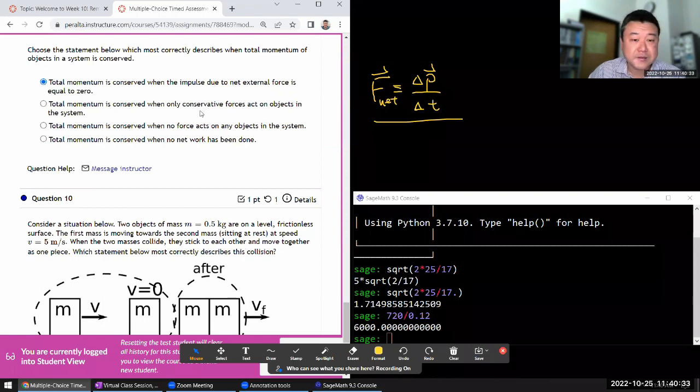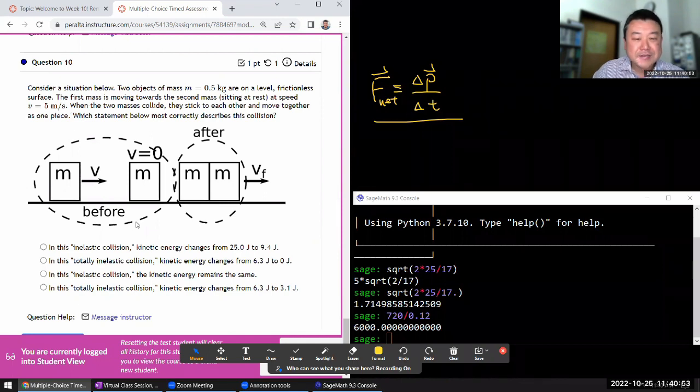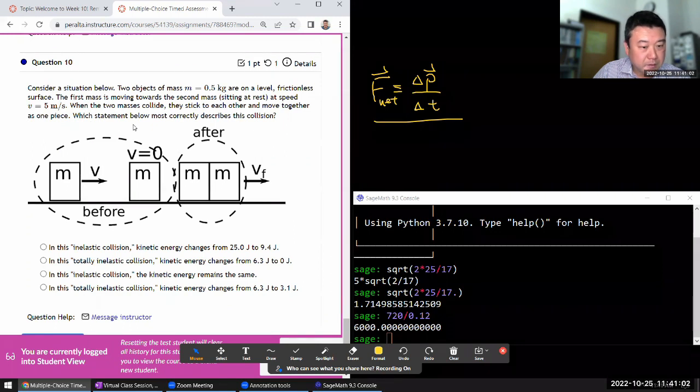Conservative force has nothing to do with it. That's about conservation of energy. This is a little too strong. It's not the most correct, because it's like internal forces are fine. And this is energy stuff. All right. It's the same setup as above, but they're asking different questions. Same mass, frictionless. At this speed, collide, stick together, move together as one piece.